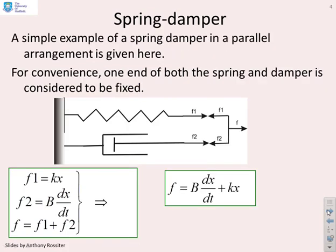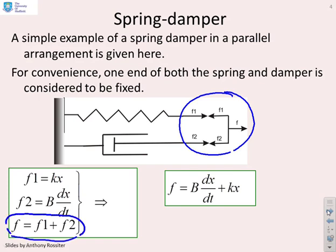We also looked at the spring damper system in first-order models, and you'll see the same sort of arrangement, where the forces add. We get F equals F1 plus F2, where F2 is driving the damper and F1 is driving the spring. This gives us a simple first-order model.